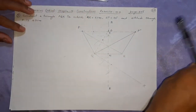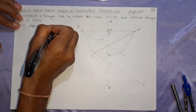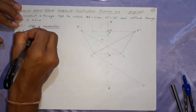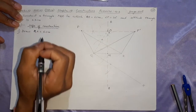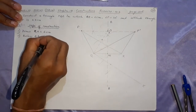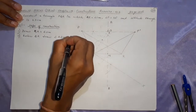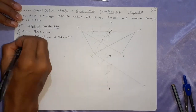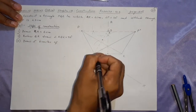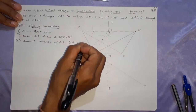This way we have finished. So we will write the steps of construction. Step 1: Draw QR equal to 6 centimeter. Step 2: Below QR, draw angle RQX equal to 30 degrees.